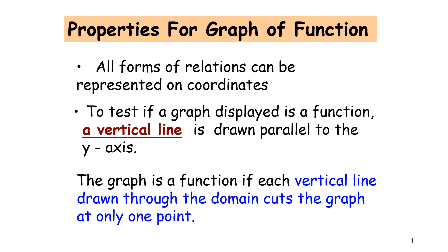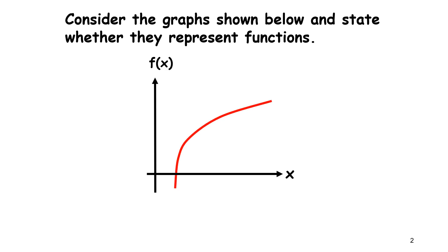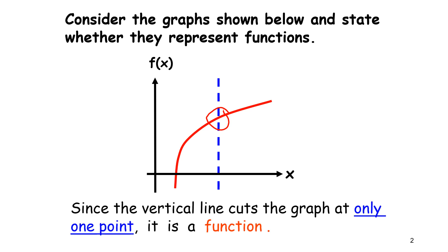Consider the graphs shown below and state whether they represent a function. For the first graph, when we draw a vertical line, it cuts at only one point. Since the vertical line cuts the graph at only one point, it is called a function.